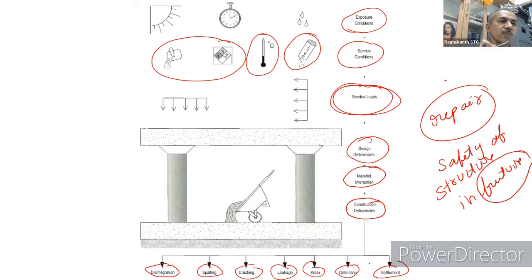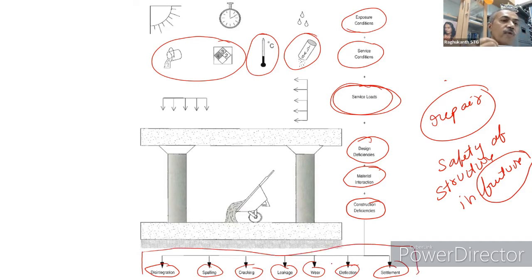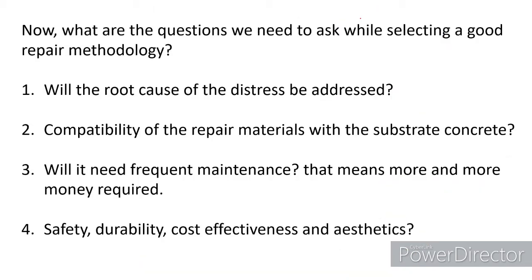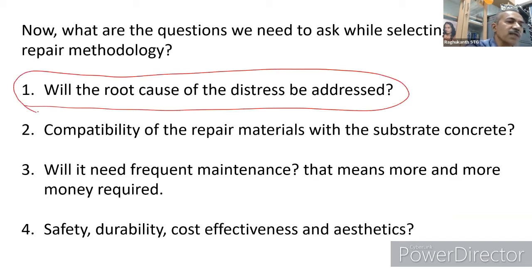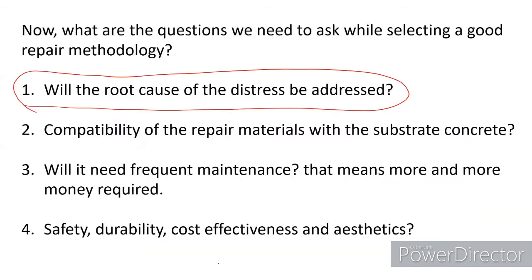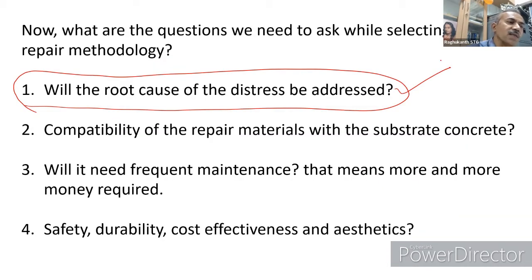Repair is essentially an inverse problem: you observe effects like settlement, deflection, wear, or cracking, and must find whether the cause is a construction deficiency, material interaction, overloading, or exposure. This cause must be established before selecting any repair methodology. The most critical question is whether the root cause will be addressed by the repair strategy, because if you don't address the root cause, you may need to do repairs repeatedly.